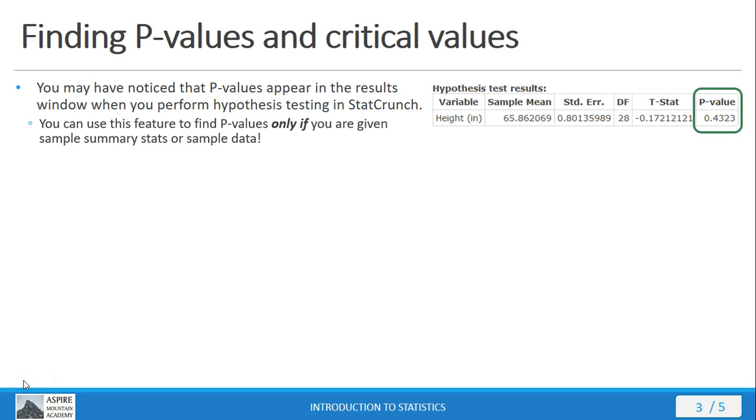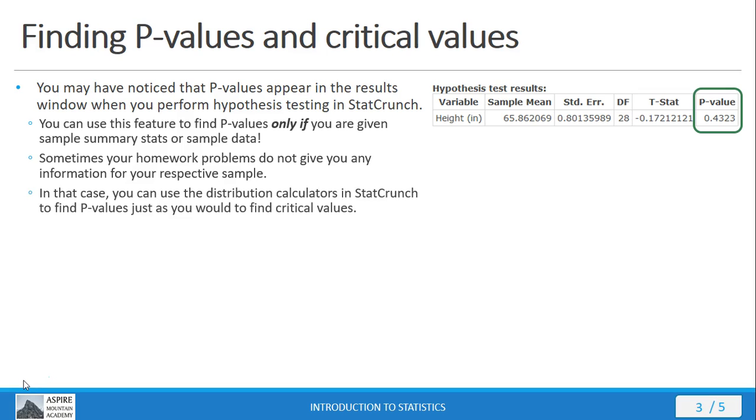Okay, well, then, you can't really use that procedure to get to it. Using those options, as you saw, that options window is going to demand some input from you before it can produce results. So, what do you do if you don't have summary stats or data for your sample? Well, sometimes you find that your homework problems require you to give a p-value, but they don't give you any of that information.